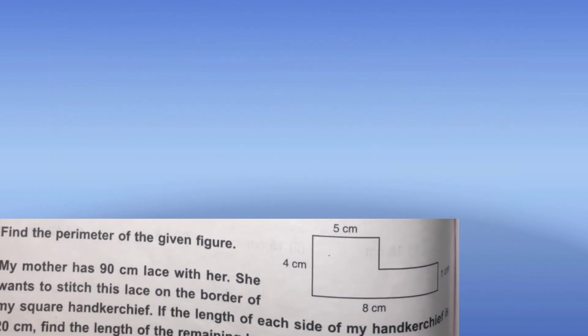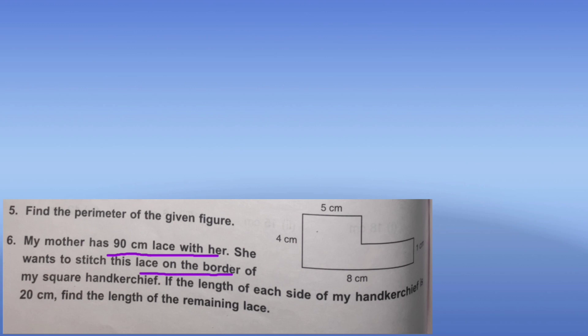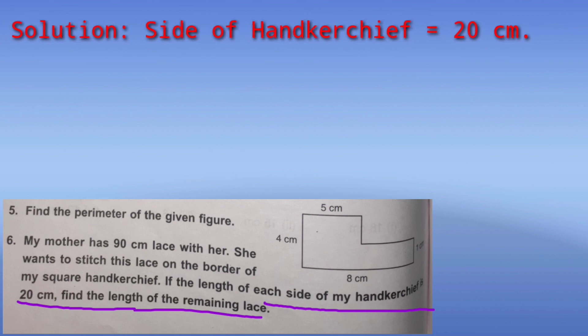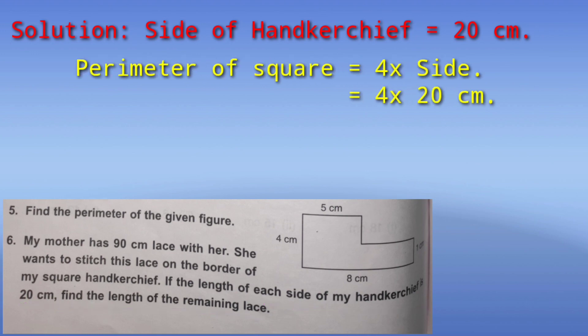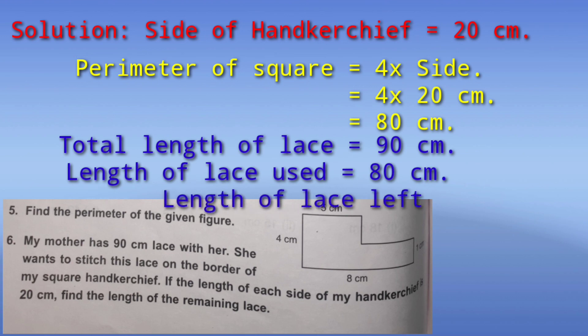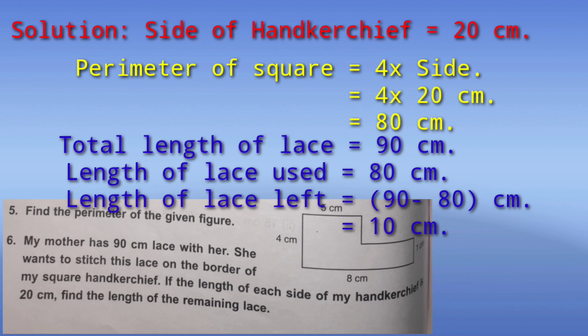Last question: my mother has 90 cm of lace and wants to stitch it as a border on a square handkerchief. The side of the handkerchief is 20 cm. Perimeter of square = 4 × side = 4 × 20 = 80 cm of lace is used. Leftover lace = 90 minus 80 = 10 cm.